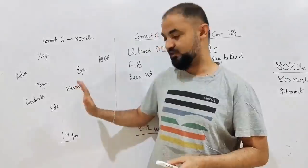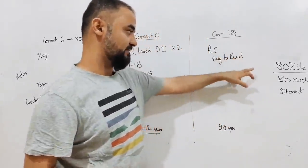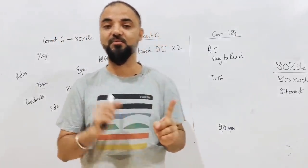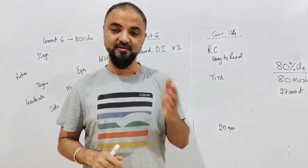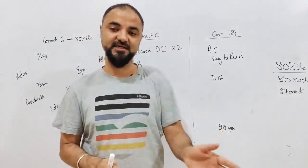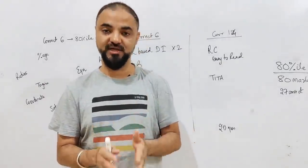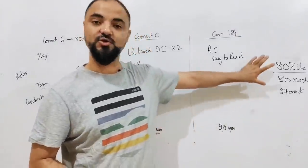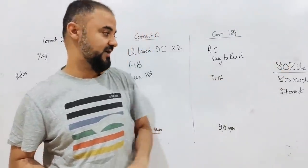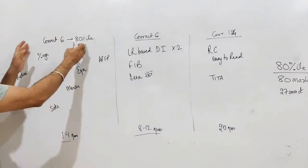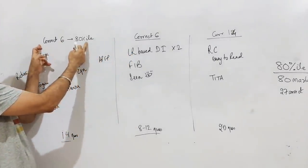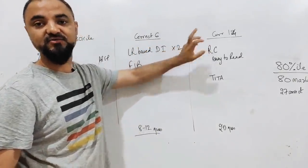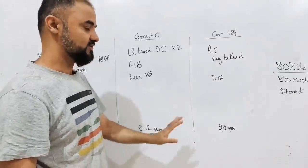To get 80 percentile you need 80 marks. Up to 85 percentile, one mark is one percentile - so 50 marks is 50 percentile, 80 marks is 80 percentile, 70 marks is 70 percentile. Whatever marks you get in the CAT paper, that much is your percentile up to 85 percentile. To get 80 percentile your target should be 80 marks. Per section: 6 correct in Quant is 80 percentile, 6 correct in DI Logic is 80 percentile, and 14 correct in Verbal is 80 percentile.